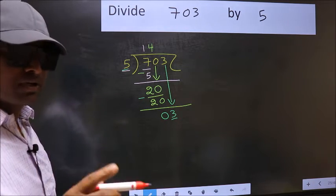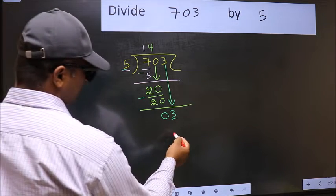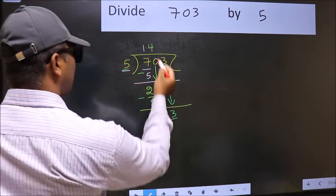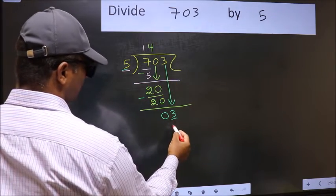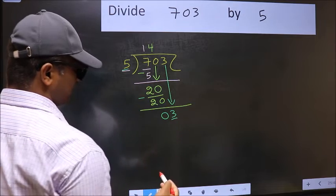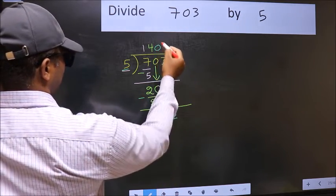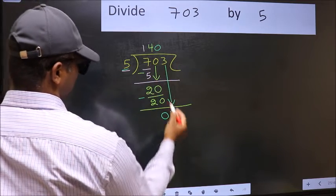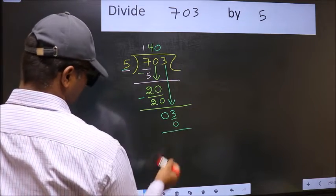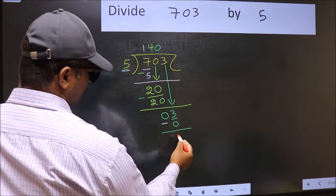Instead, what you should think of doing is, what number should we write here? If I take 1 here, we will get 5. But 5 is larger than 3. So what we should do is, we should take 0. So 5 into 0, 0. Now you should subtract. 3 minus 0, 3.